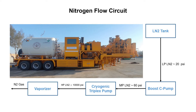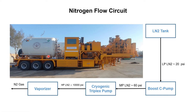As we have already discussed the main components of a nitrogen pumping unit: the liquid nitrogen storage tank, then the low pressure manifold and C pump also known as boost pump, then the control panel. After that we have cryogenic pump, also known as high pressure triplex pump. And then we have vaporizer and then the discharge line.